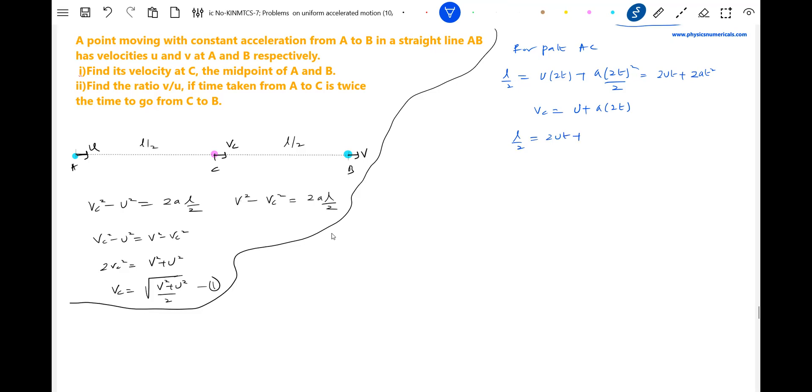This will be 2t plus 2at squared. Let me introduce that vc there. L by 2 equal to 2ut. I can write 2t as vc minus u, and in turn ut. I'm going to substitute 2at in this equation here.